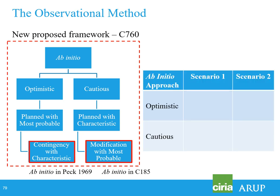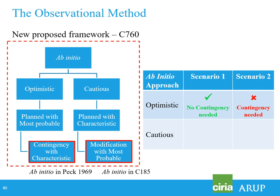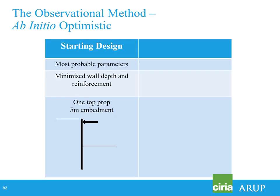We'll go through a few examples to drive home how to use ab initio and Ipso Tempore. We'll go through idealised examples: one optimistic approach and one cautious, with two scenarios for each — one where things go well and one where things go badly. Scenario one: optimistic, no contingency needed. Scenario two: contingency needed.